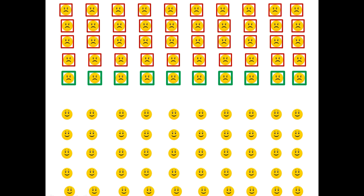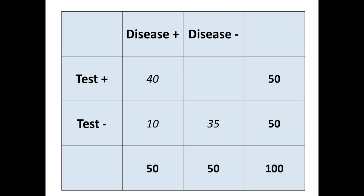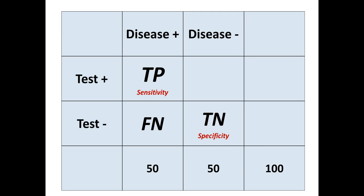Let's go back to our validation sample and look at the bottom. We have 50 people who do not have the disease, and let's say 35 of them tested negative. So 35 negative tests out of 50 people without the disease is our estimate of specificity. Looking at our 2x2 table, we have 35 people without the disease testing negative out of 50. Specificity is the probability you will test negative given that you do not have a disease — in this case, 35 out of 50, so our estimate is 70%. Specificity can also be thought of as the true negative rate.